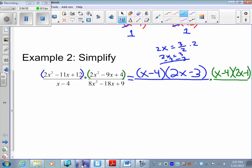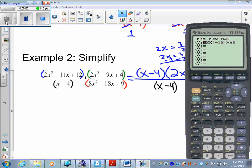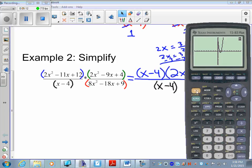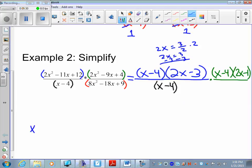Next denominator is x minus 4 which cannot be factored. The last one, 8x squared minus 18x plus 9, put in calculator and graph it. See two x-intercepts, trace this. Left bound from the first, keep it a little away, right bound and enter. Get 0.75.